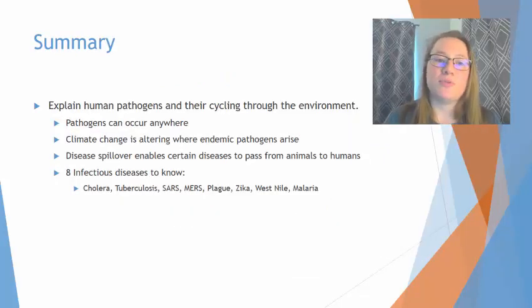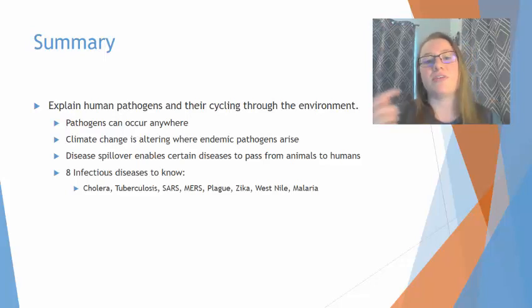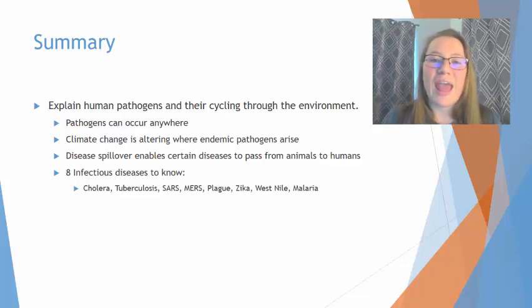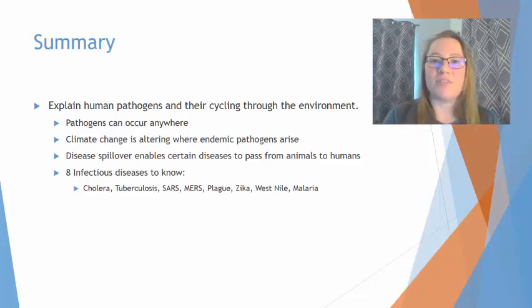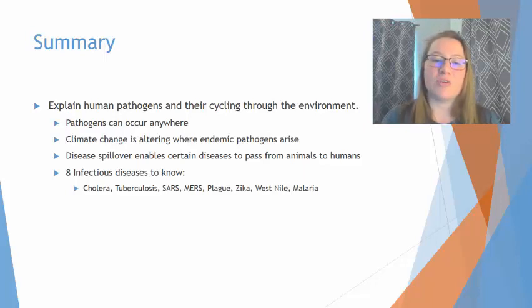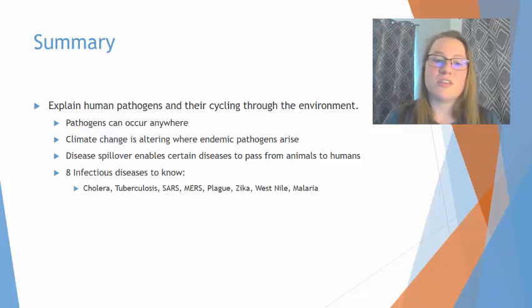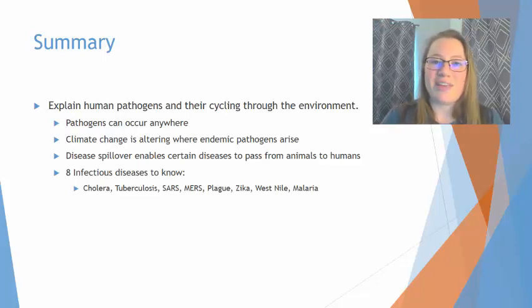In summary, you should be able to explain human pathogens and their cycling through the environment. Keep in mind that pathogens can occur anywhere, not just in less developed regions of the world. Climate change is accelerating where endemic pathogens arise, and increased human-wildlife contact is adding to disease spread. Disease spillover is when increased contact causes diseases to pass from animals to humans. You need to know all eight pathogens discussed: cholera, tuberculosis, SARS, MERS, the plague, Zika, West Nile, and malaria.